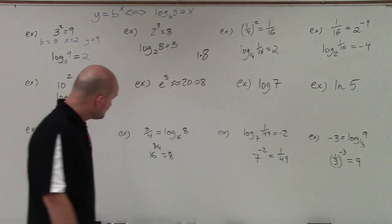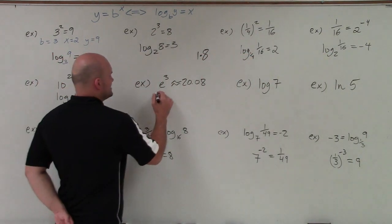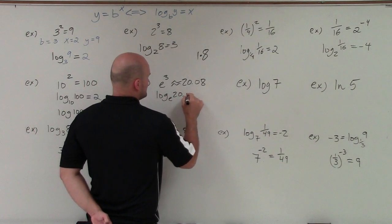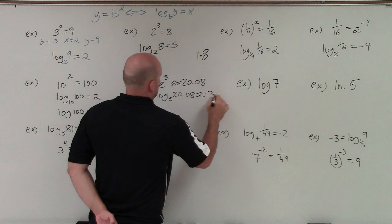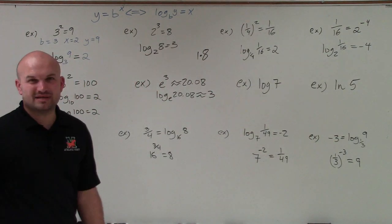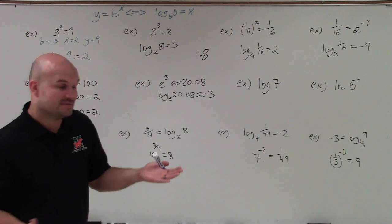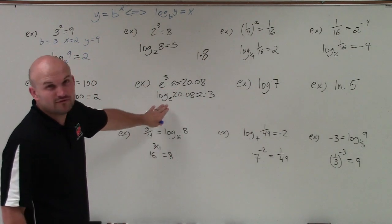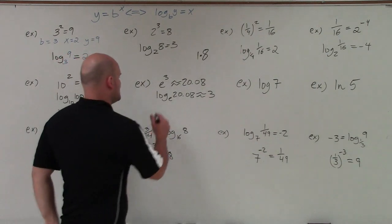The same thing for e. We'll just write this as log base e of 20.08 equals 3. And I'm using approximate because e is an irrational number. So doing the logarithms with the irrational numbers is going to still give you approximate values.